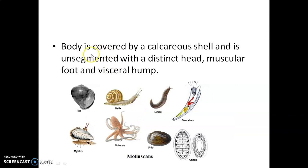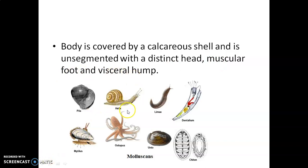They are coelomate animals with a true body cavity. Their body is covered by a calcareous shell — the outermost exoskeleton is made up of calcium carbonate. The body is unsegmented, with no segmentation, and has a distinct head, muscular foot, and visceral hump.